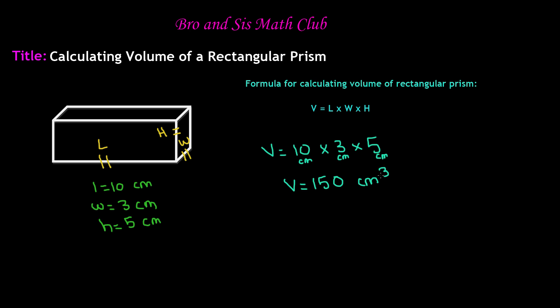The reason behind that is because you multiply 10, 3, and 5 to get 150. You still have to multiply the centimeters together. Centimeter times centimeter times centimeter. You get, each of these is a power of 1. So you get centimeters cubed.